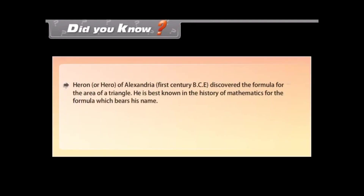Did you know? Heron, or Hero of Alexandria, 1st century BCE, discovered the formula for the area of a triangle. He is best known in the history of mathematics for the formula which bears his name.